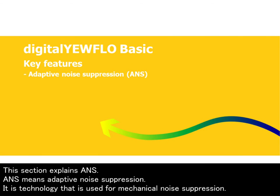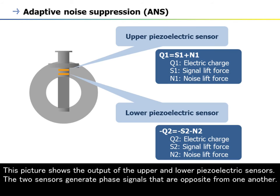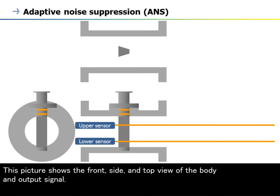This section explains ANS. ANS means adaptive noise suppression. It is a technology used for mechanical noise suppression. This picture shows the construction of the detector portion. The shutter bar assembly of the Digital EarFlow uses two piezoelectric sensors. This picture shows the output of the upper and lower piezoelectric sensors. The two sensors generate phase signals that are opposite from one another, and the noise caused by vibration is superimposed on the signal at the same time. This picture shows the front, side, and top view of the body and output signal.